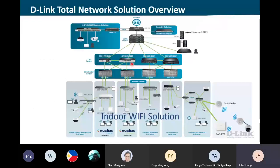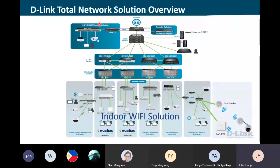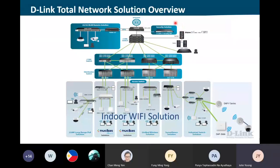So overall for the solution, we have a one-stop total solution. On the left-hand side over here, you can see that we're able to support the remote side. You can set up the DWM321, 312, PPM back to the HQ. Of course, the HQ we can set up the firewall - we have the DFL870. Then next, the security solution over here, we have the L7 security gateway.